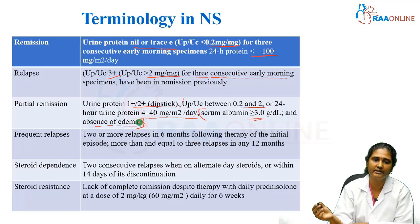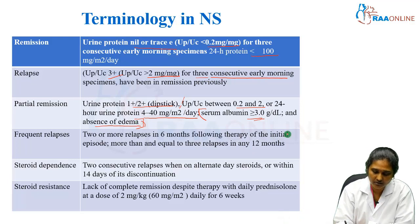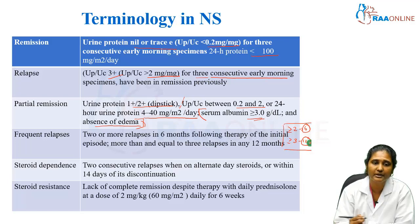When you call it as frequent relapses, it means there are more than or equal to 2 relapses in 6 months from the initiation of therapy, or more than or equal to 3 relapses in a 12-month period. This is considered to be frequent relapses.